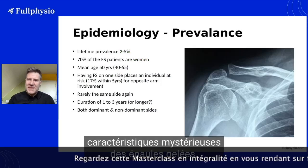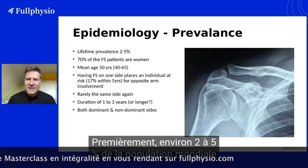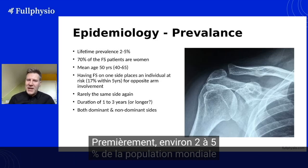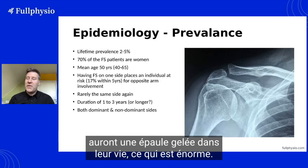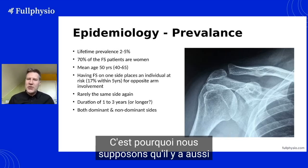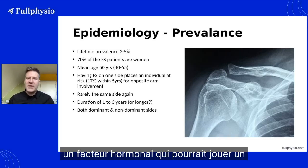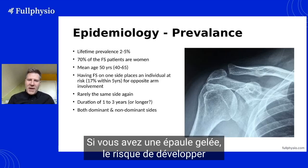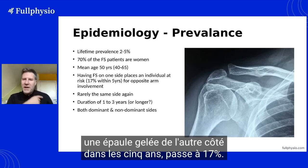Let's look at some of frozen shoulder's mysterious characteristics. First, about two to five percent of the world's population will have a frozen shoulder in their lifetime, which is massive. Seventy percent of them are women around their 50s, which is why we assume there is also a hormonal factor that might play a role in the development of frozen shoulder.